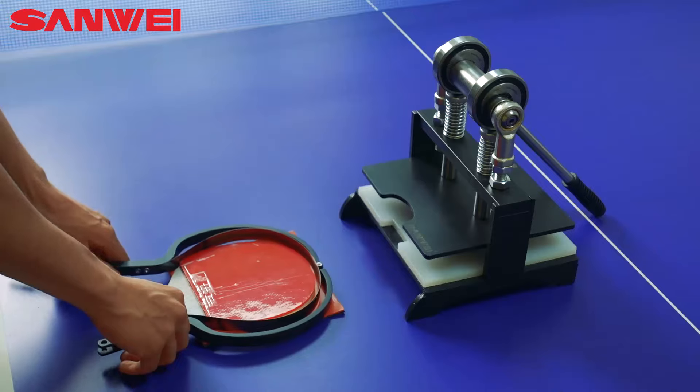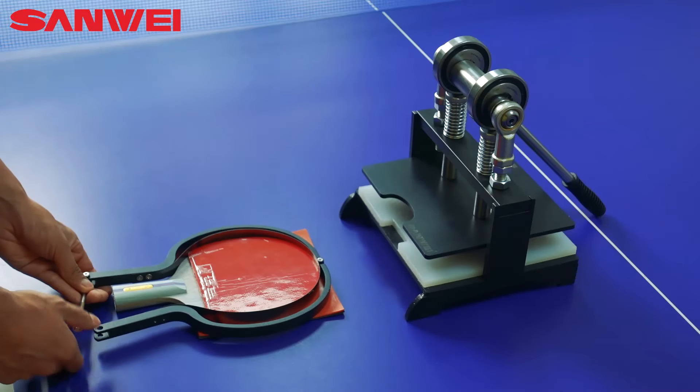Third, place the fixing frame on the glued blade, and then tighten the fixing bolts.